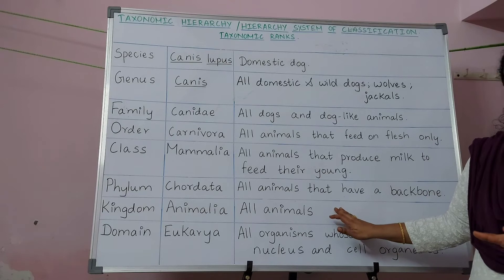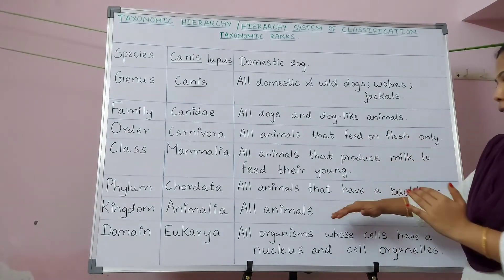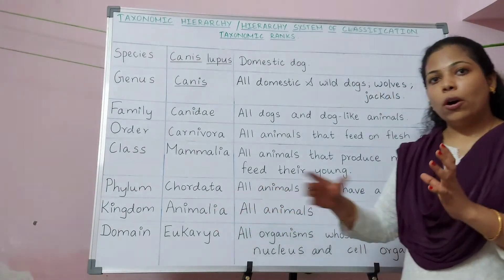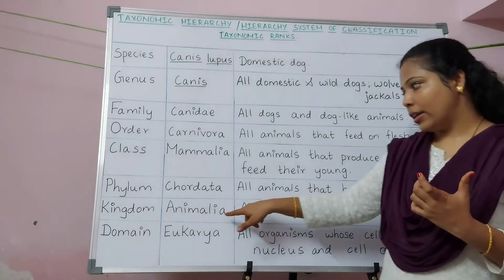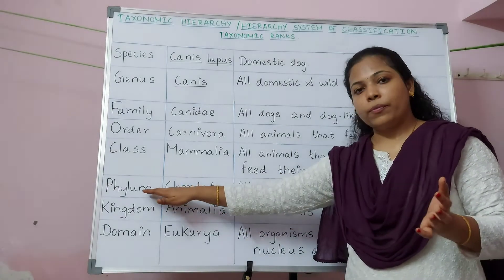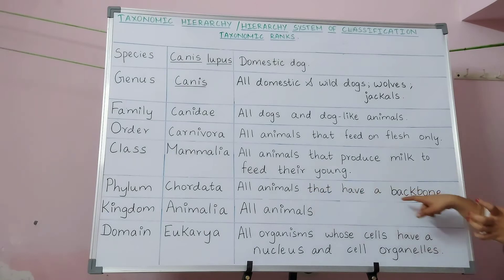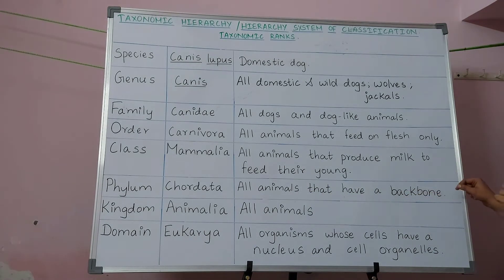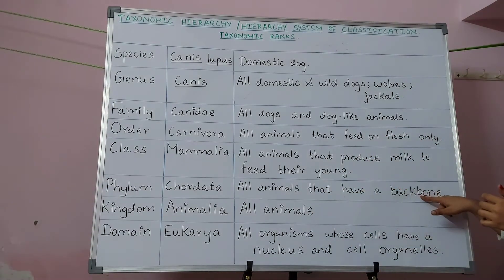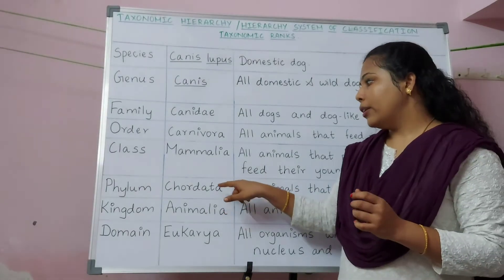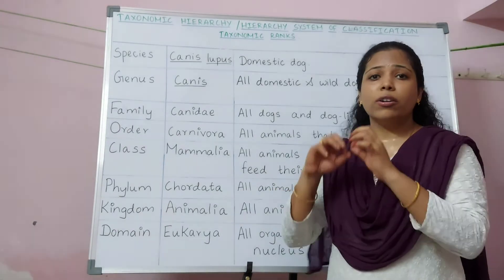In kingdom Animalia, we exclude plants, fungi, algae, and protozoans, concentrating only on animals. Since all animals are not similar, kingdom Animalia is categorized into phylums. One such phylum is Phylum Chordata, which includes animals that have a backbone. Here we exclude animals that do not have a backbone, concentrating only on vertebrates.